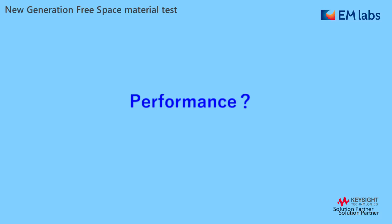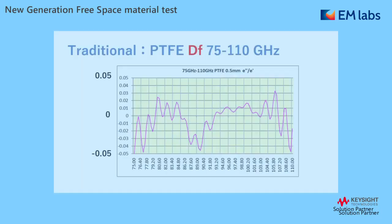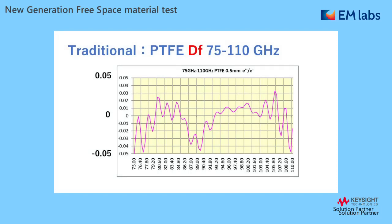How about performance? This is a PTFE free space test example we used for our solution introduction. You can see DK is about 2. Considering high frequencies like 100 GHz, it was accepted as reasonable. The DF value is around 0, so you may say low loss — but I think it's fair to say it was not so accurate.